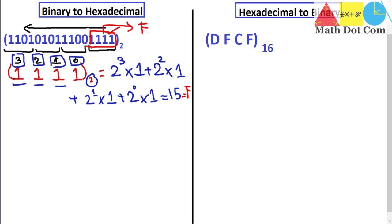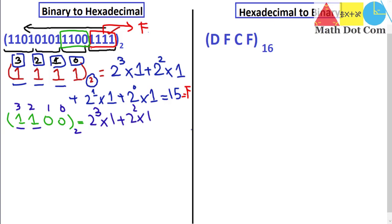Now we take the next group of bits: 1, 1, 0, 0. Following the same procedure with locations 0, 1, 2, 3, we calculate: 2 to the power 3 multiplied by 1, plus 2 to the power 2 multiplied by 1, plus 2 to the power 1 multiplied by 0, plus 2 to the power 0 multiplied by 0. This gives 8 plus 4 equals 12, and in hexadecimal 12 is equal to C. Keep in mind: in hexadecimal, digits 0–9 are the same, then 10=A, 11=B, 12=C, 13=D, 14=E, and 15=F.